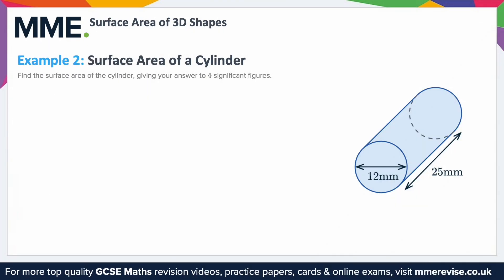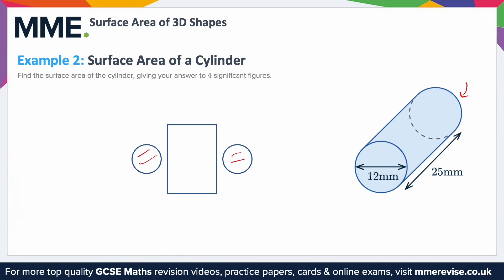Example 2: surface area of a cylinder. Find the surface area of the cylinder, giving your answer to four significant figures. Remember we can split a cylinder up into its individual parts: two circles, one at either end, and then a rectangle in the middle that gets rolled up to make the tube. The formula for the surface area of a cylinder is 2πr² plus 2πrh.